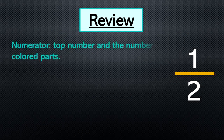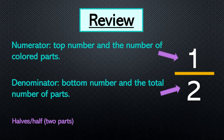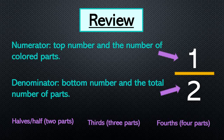Let's review. Numerator means the top number, and it's the number of colored parts. In this fraction, you can see that the numerator is one. Denominator is the bottom number, and the total number of parts. In this fraction, you can see that the denominator, or bottom number, is two. A few more words to remember: halves, or half, means there are two parts in the shape. Thirds means there are three parts, and fourths means there are four parts.